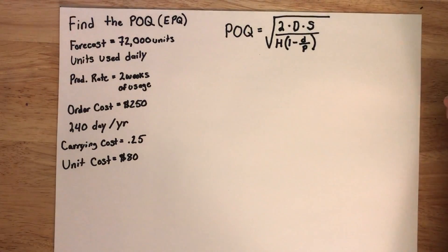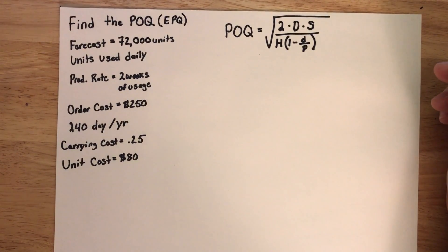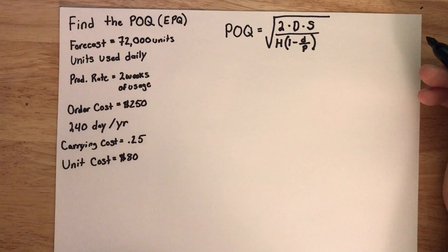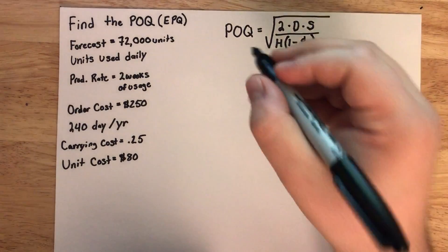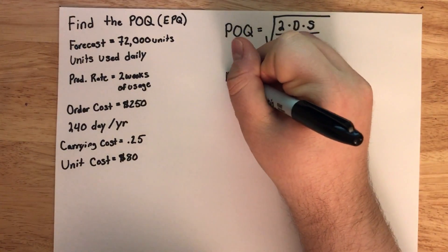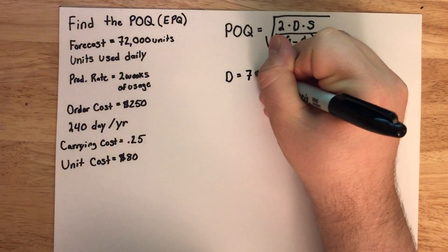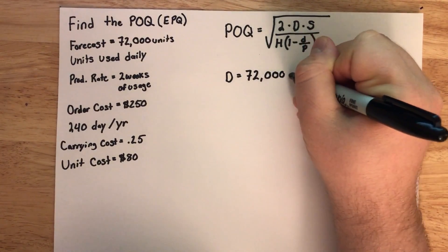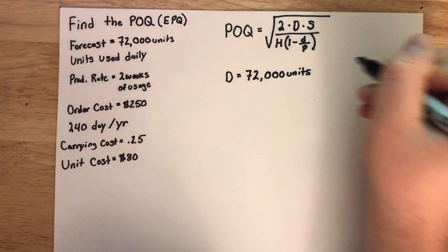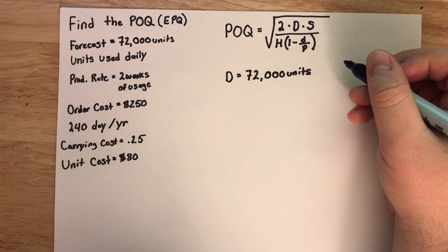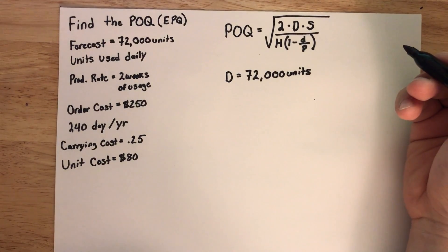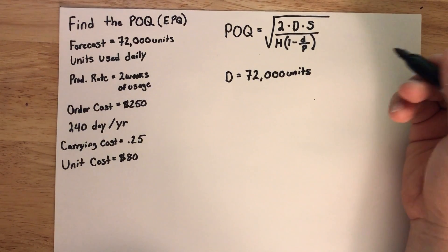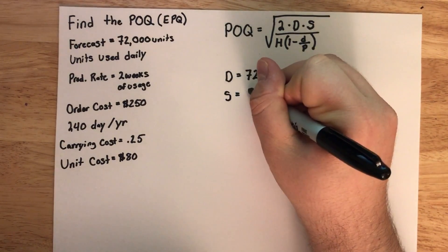Now that we know the equation we are using, we need to identify the variables given in the problem and correlate those with the variables in the equation. We will first look at D. D is defined as the yearly demand. We know that the forecast for the year is 72,000 units, which is the same as the demand for the year, so uppercase D must be equal to 72,000 units. We also know that uppercase S is defined as the ordering cost per order, and we are given that the ordering cost is $250, so S equals $250.